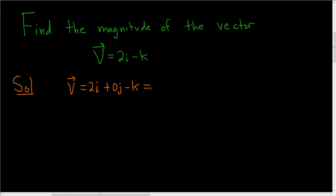And so in component form, this can be written as 2, 0, and then negative 1.